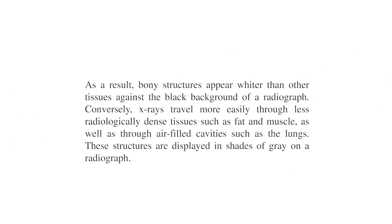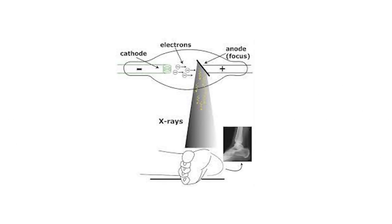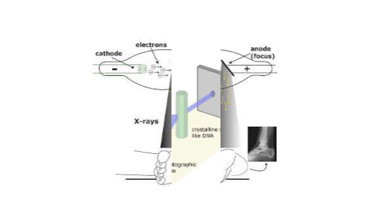Conversely, x-rays travel more easily through less radiologically dense tissues such as fat and muscle, as well as through air-filled cavities such as the lungs. These structures appear in shades of gray on the radiograph. Here is an image showing how x-rays work — the cathode emits electrons to the anode, x-rays are focused and pass through the body tissues, and a radiograph is taken.